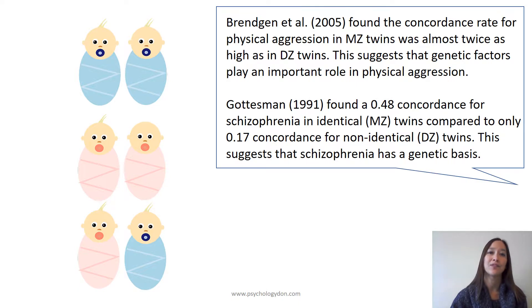Rengina Tao, 2005, found that the concordance rate for physical aggression in MZ twins was almost twice as high as in DZ twins. This suggests that genetic factors play an important role in physical aggression.